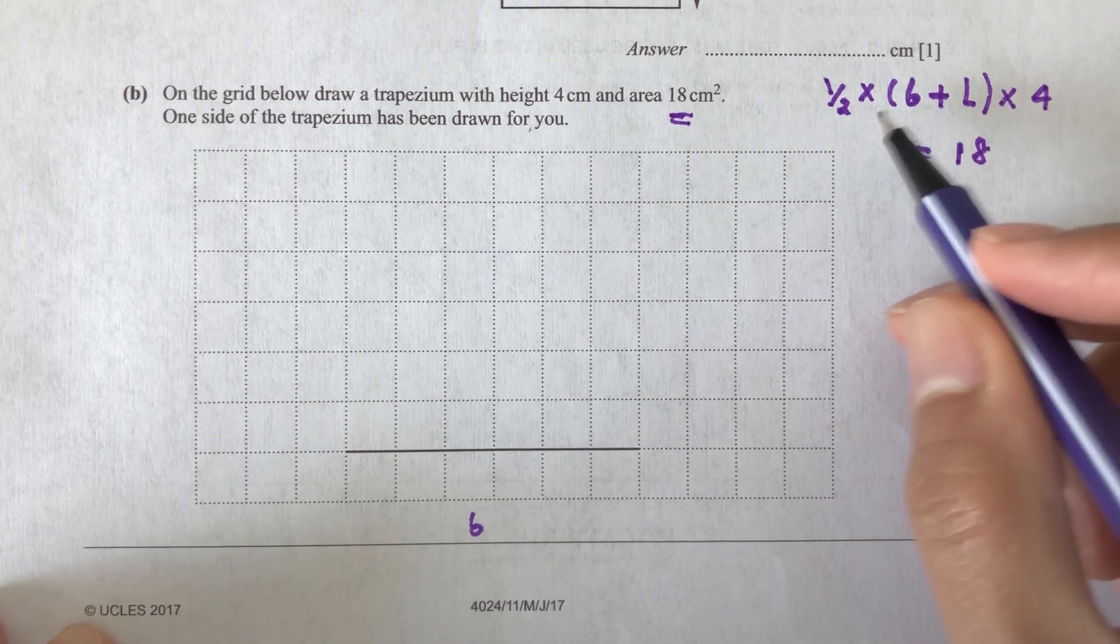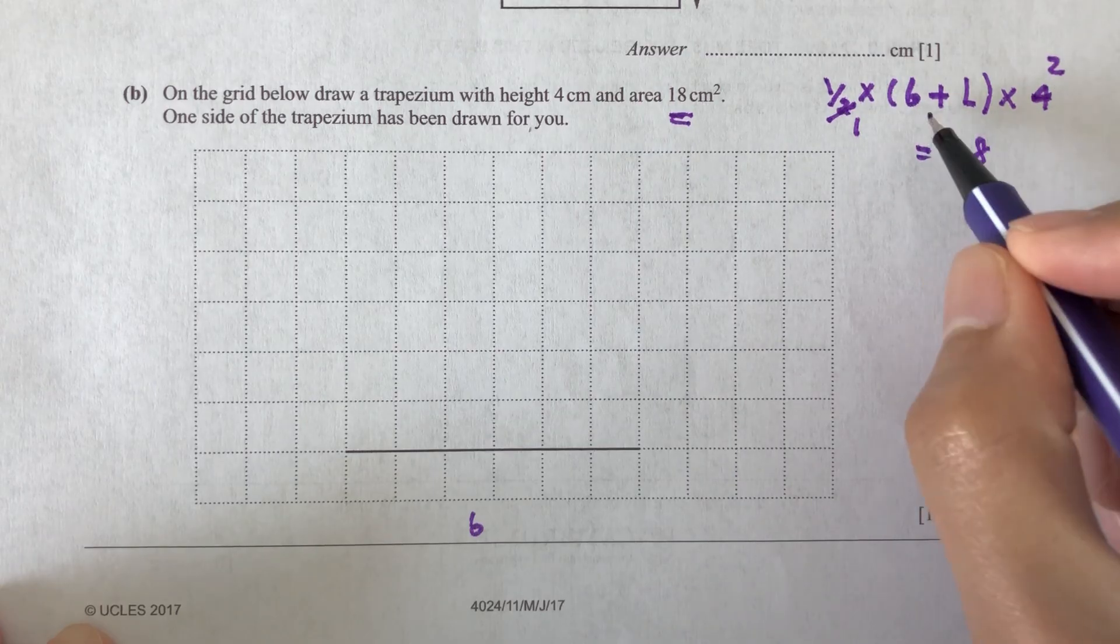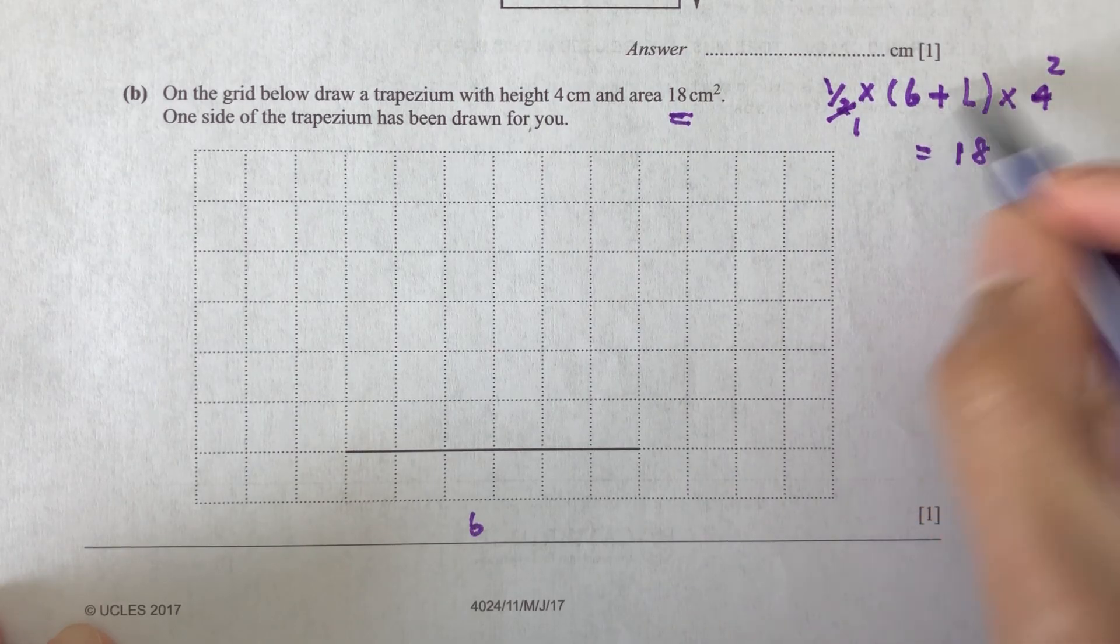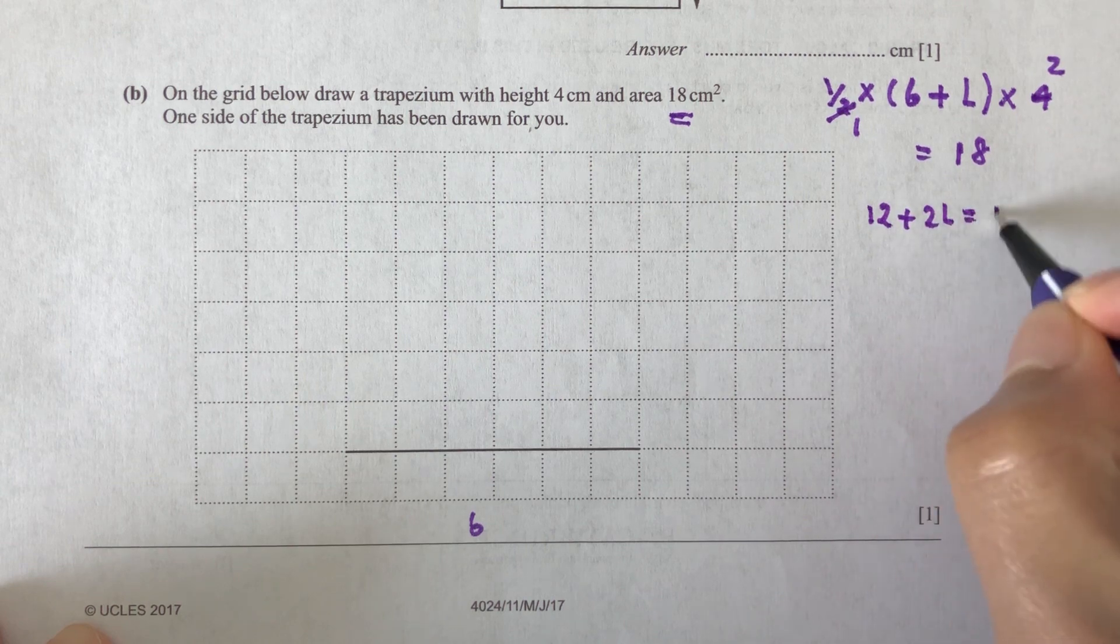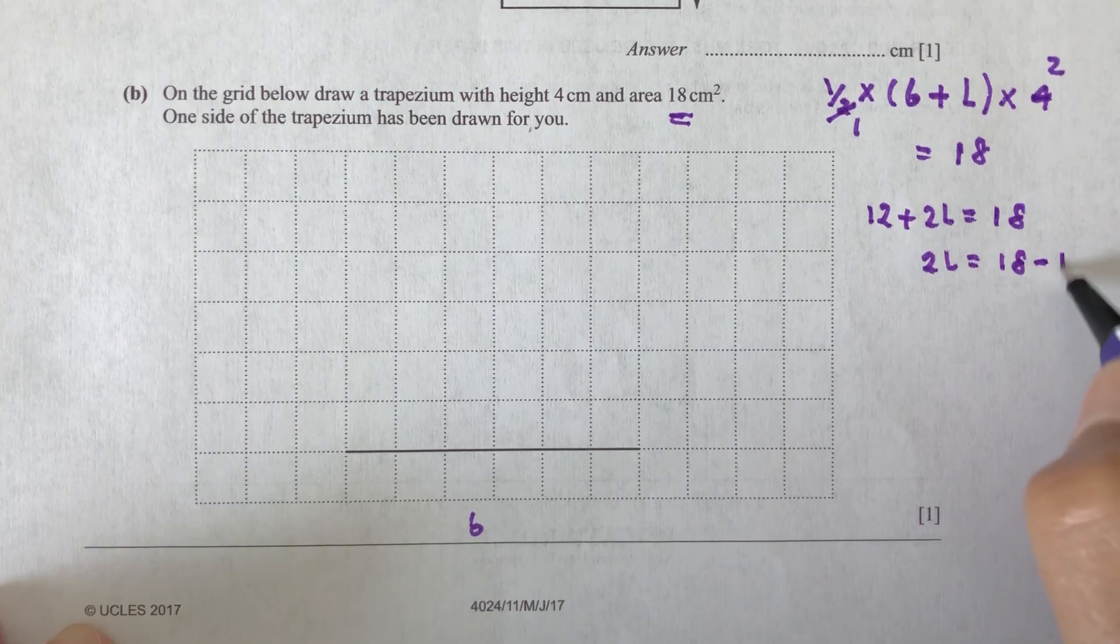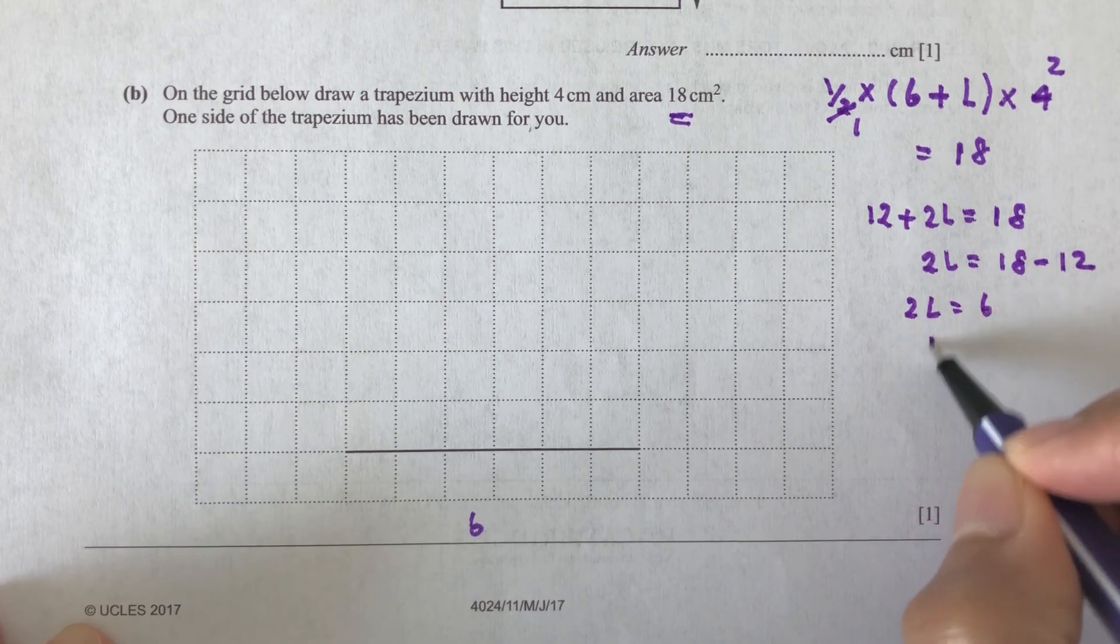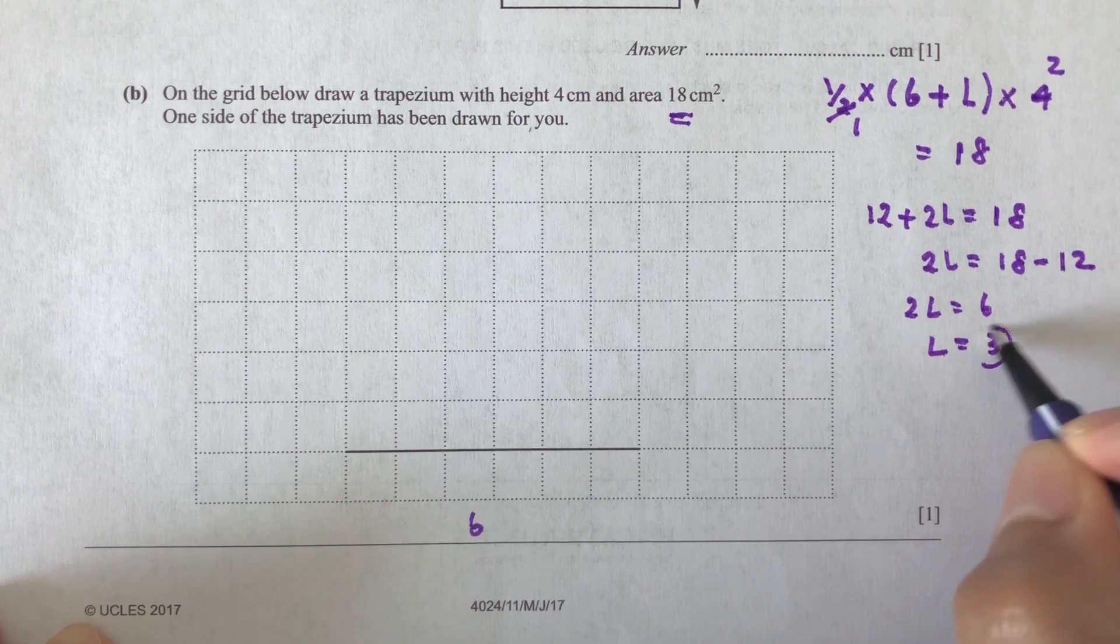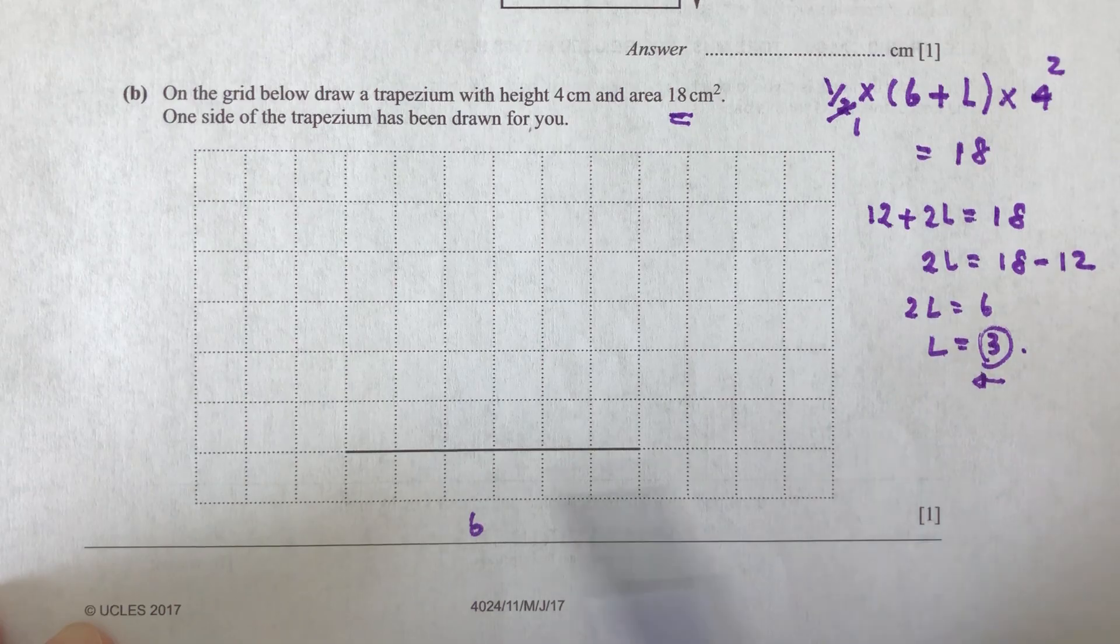So all this is equal to 18 centimeters square. So now let's simplify. So this will be 1, this is 2. So expand the bracket. We will have 2 times 6 is 12, plus 2L is equal to 18. So 2L is equal to 18 minus 12. So 2L is 6, L is 3.